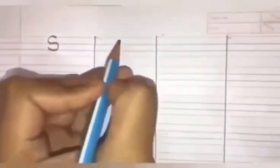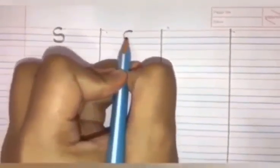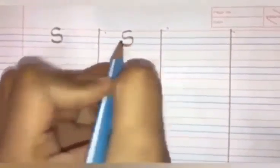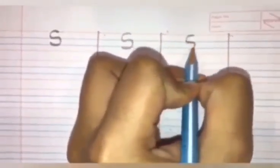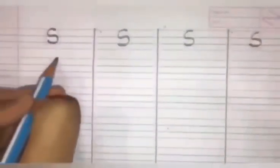Now we learn how to write the alphabet S. To write the alphabet S, you make a right curve, come down to the first blue line and make a left curve like this. This makes the alphabet S. Write it again. Right curve and the left curve below. This makes the alphabet S.